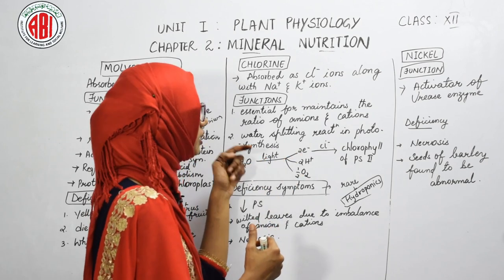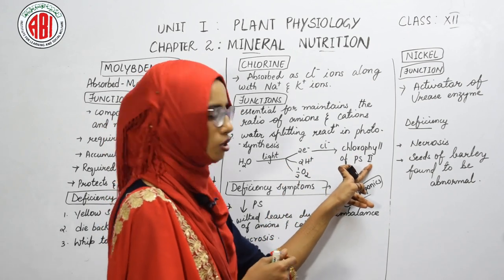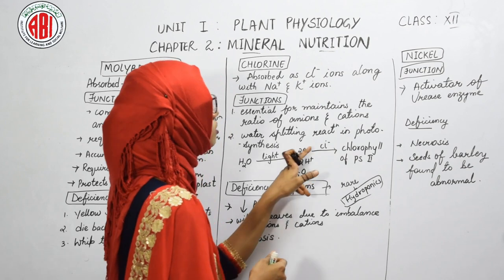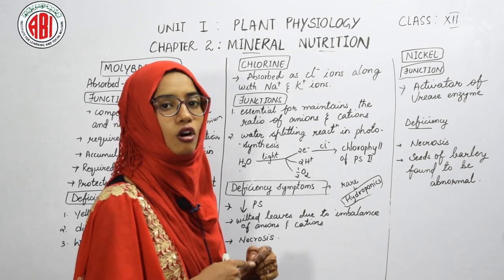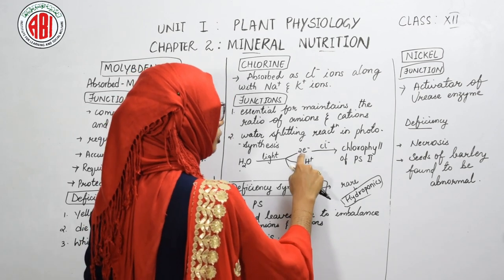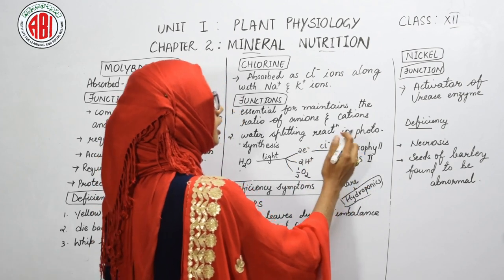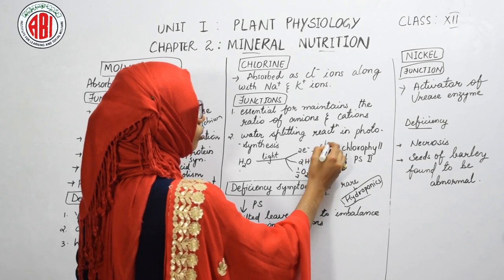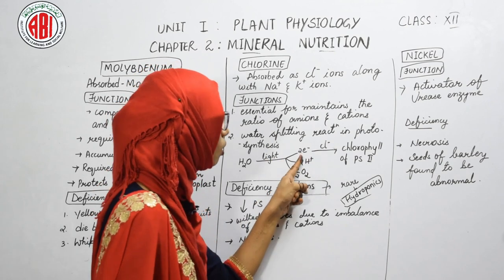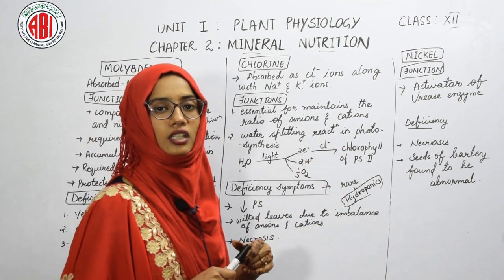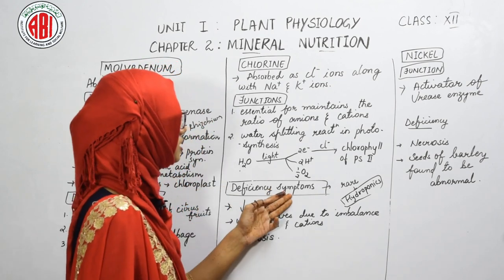The electrons released by water splitting are carried to the chlorophyll of Photosystem II (PS2). This transport of electrons to the chlorophyll of PS2, to proceed the reactions of photosynthesis, takes place through chloride ions. Thus chloride ions are responsible for carrying electrons to chlorophyll.